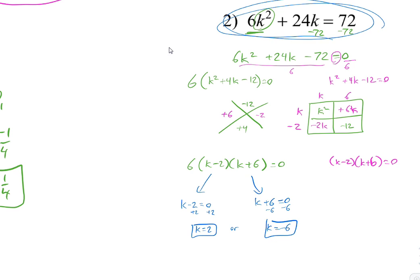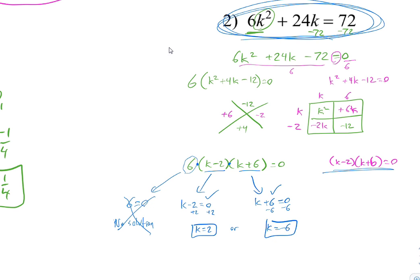You could plug these into the original equation to verify. Note: if you kept the 6 outside, you'd have 6 times k minus 2 times k plus 6 equals 0. We need to check all three factors. Either k plus 6 equals 0, or k minus 2 equals 0, or 6 equals 0. That last one gives no solution — there's no k that makes 6 equal 0. So our only solutions are k equals 2 or k equals negative 6, which is what we expect: two answers for a quadratic.